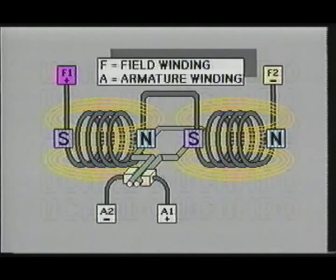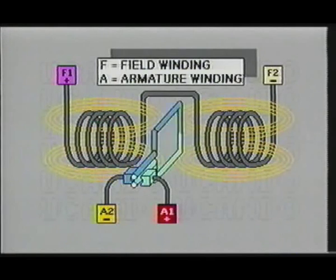The armature winding is not creating a magnetic field of its own. Therefore, there is no repulsion or attraction taking place between the armature winding and the field windings.